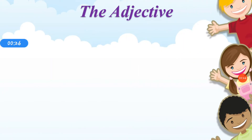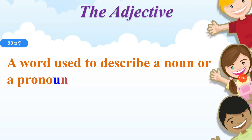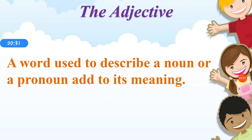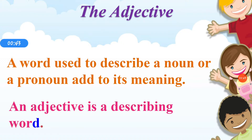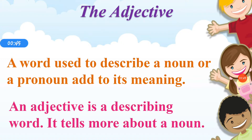First, we will know what is an adjective. A word used to describe a noun or a pronoun and add to its meaning. In simple words, an adjective is a describing word. It tells more about a noun.